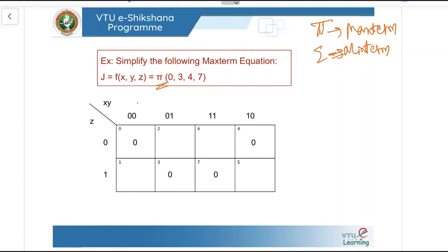We have the max term equation and it is a 3-variable K-map. This side is XY, this side is Z. The structure of the K-map is the same as for the min term expression. The decimal equivalent of each cell is the same: 0, 1, 2, 3, 4, 5, 6, and 7. The only difference is we need to load 0s into the K-map. Let us load the K-map with 0s.